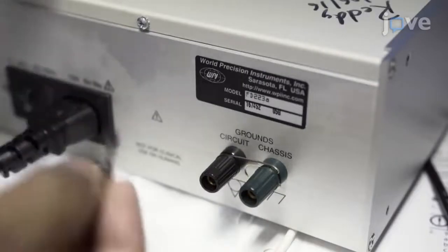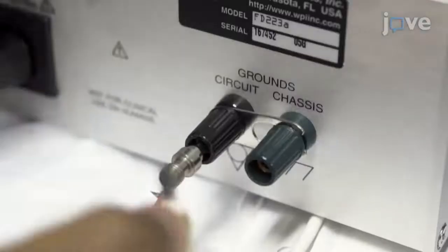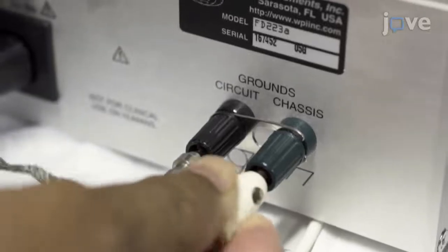Then connect the bath ground to the circuit ground of the amplifier with an appropriate electrode and ensure that the cage is grounded to the chassis of the amplifier.